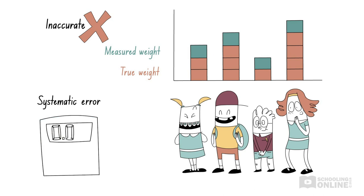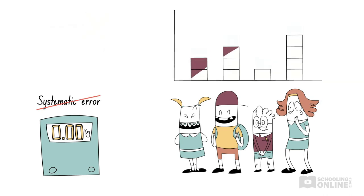If we reset the scales so that they start at 0, we can remove this systematic error and everyone will get the correct weight again.